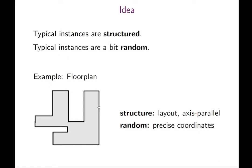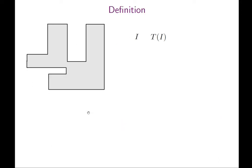But there's also some randomness because the precise measurements may not be so important. Someone designed it like this but someone else would design it slightly different. So there's also some randomness in the design process or maybe the measurement of how this instance is generated.